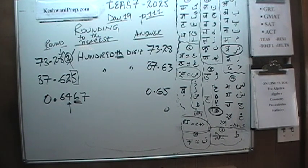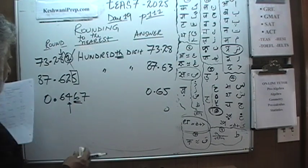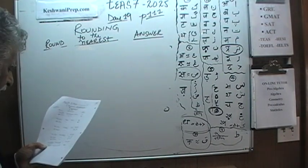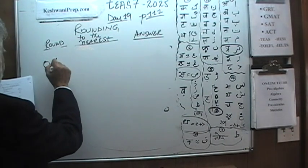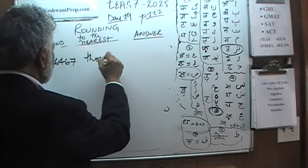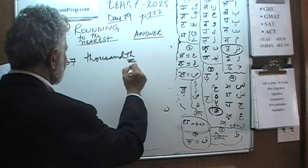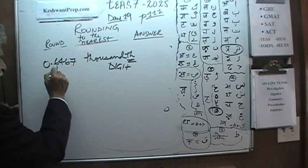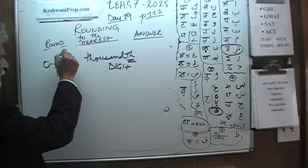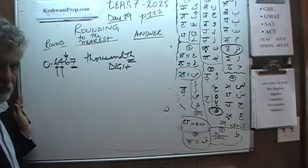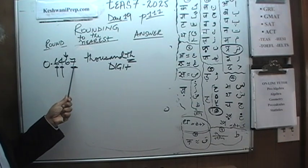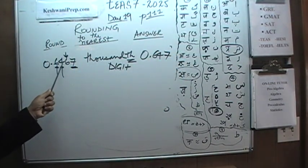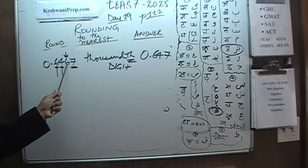This time we are rounding the same number, 0.6467, to the nearest thousandth place. The tenths digit is 6, the hundredths is 4, and the thousandths digit is 6. What comes after it is 7, which is equal to or more than 5, so the 6 becomes 7. 0.6467 rounded to the nearest thousandth becomes 0.647.